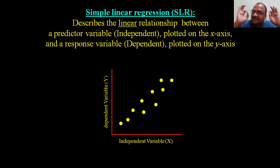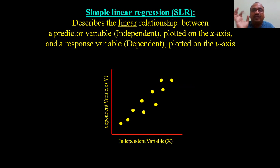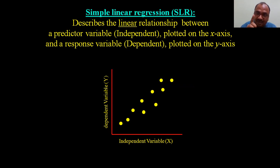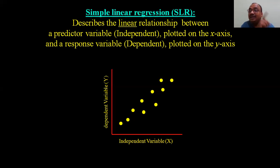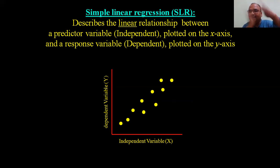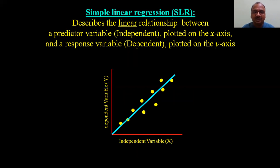SLR describes the linear relationship between a predictor variable, also called the independent variable, which is plotted on the x-axis, and its relation to the y values — the response variable, or dependent variable — which is plotted on the y-axis. So the x-axis to y-axis relationship is what we are describing with SLR.